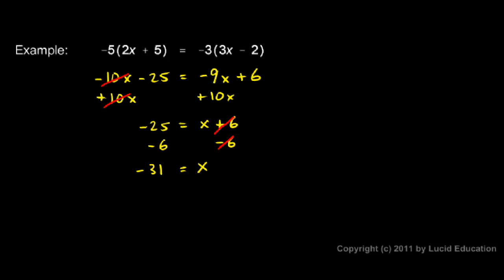If you want to, you can rewrite it so that it reads left to right: x equals negative 31. If you want to leave it as negative 31 equals x, that's okay — this is mathematically the same thing. A lot of people, though, do prefer to write it in the form x equals something, because that's the way we naturally think of it or say it. Either way you write it, understand that x is negative 31. That's the value for x that we could plug into the equation and have it result in a mathematical statement that is true.